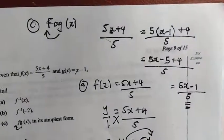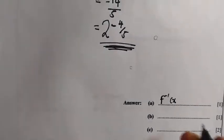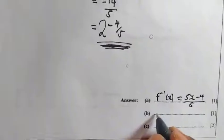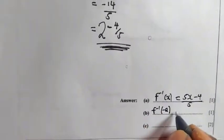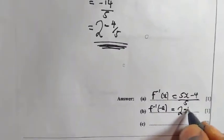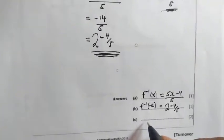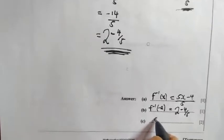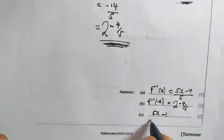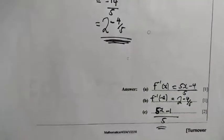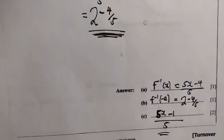So this is our answer for part c. Let me just summarize the answers: the function inverse of x is 5x minus 4 over 5; the function inverse of negative 2 is negative 2 and 4 over 5; and the composite f of g of x is 5x minus 1 over 5. Thank you so much for taking the time to view this content. Leave a comment in the comment section and I'll be able to respond to you. Bye bye.